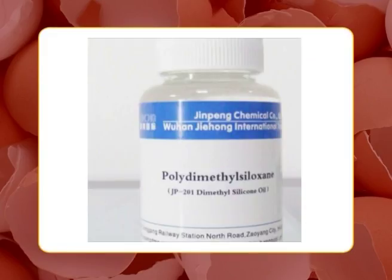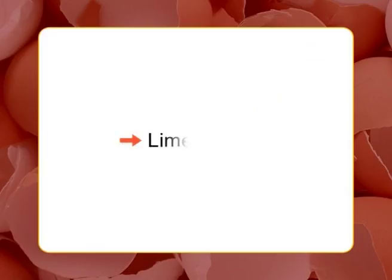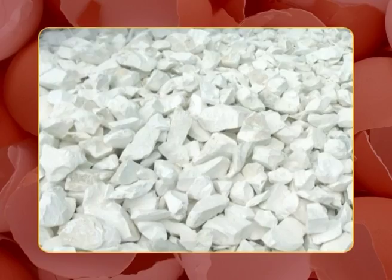Deterioration of egg albumin quality and loss of weight during storage can be retarded by storing at low temperature or by coating the eggs. Polydimethylsiloxane fluids may be used. Lime method: A liter of boiling water is added to 1 kg of quicklime and allowed to cool, then 5 liters of water are added and the solution is strained through a fine cloth.